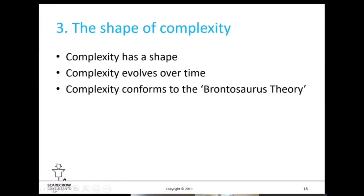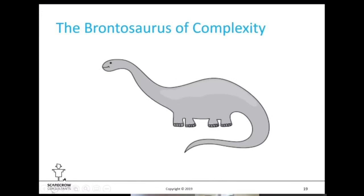When we talk about the shape of complexity, complexity evolves over time and it has a shape — it conforms to what we know as the brontosaurus theory. The magnitude of complexity in the system is analogous to the thickness of the brontosaurus at any point in time.